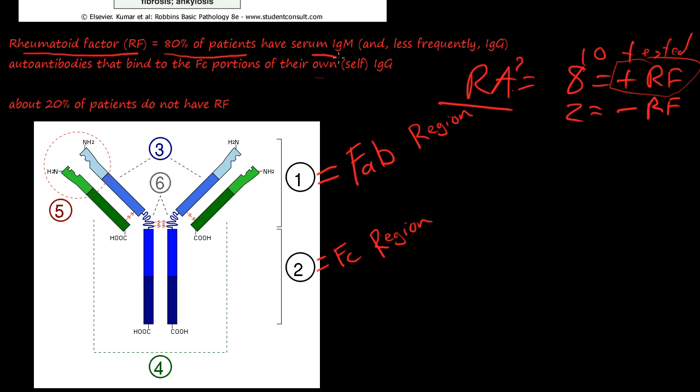What it is, is there's a serum IgM antibody, and less frequently the IgG. But they're autoantibodies that bind to the FC portion of their own IgG.